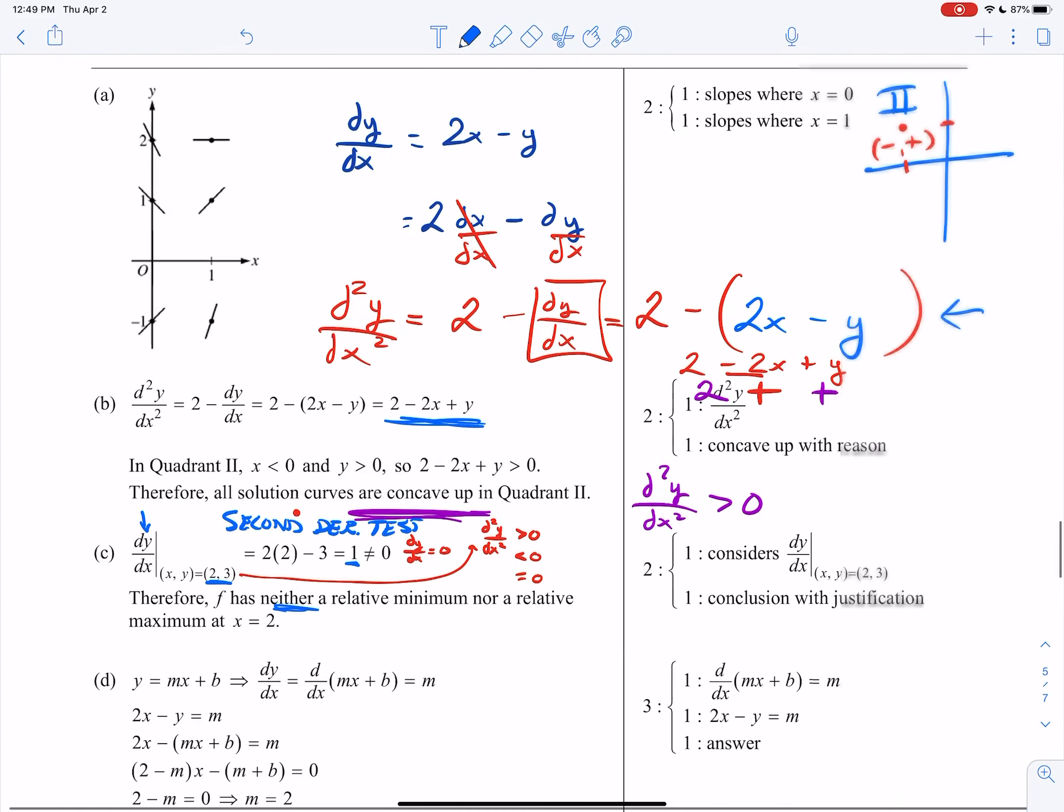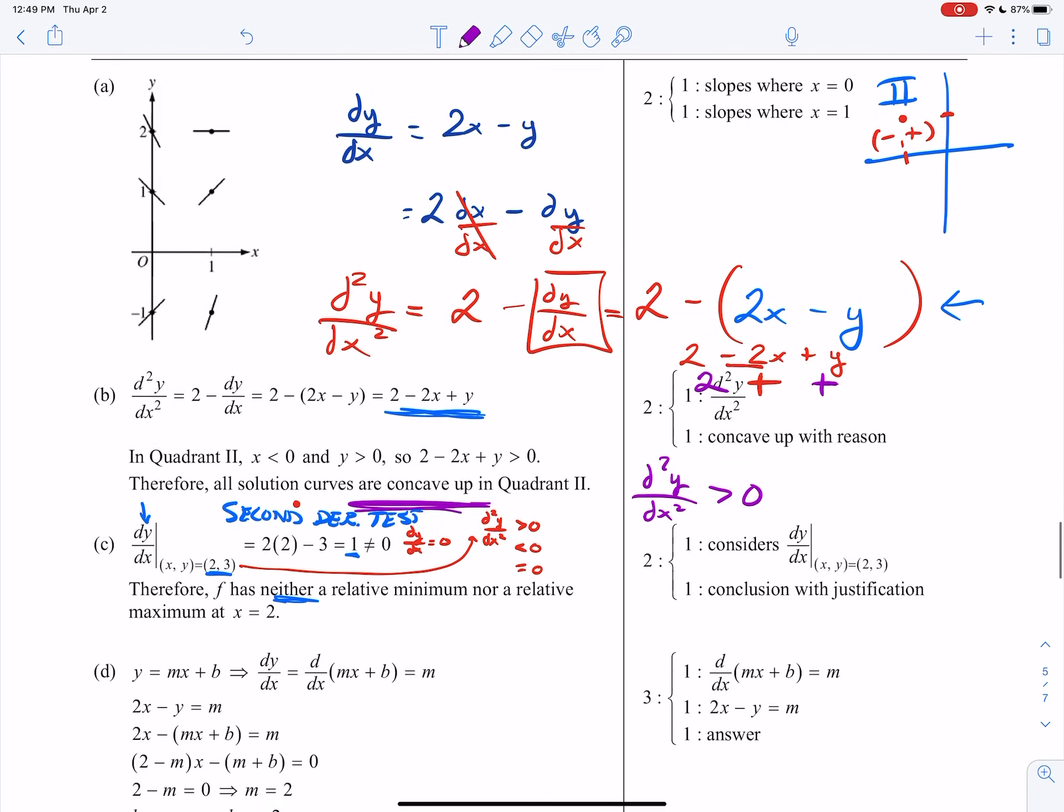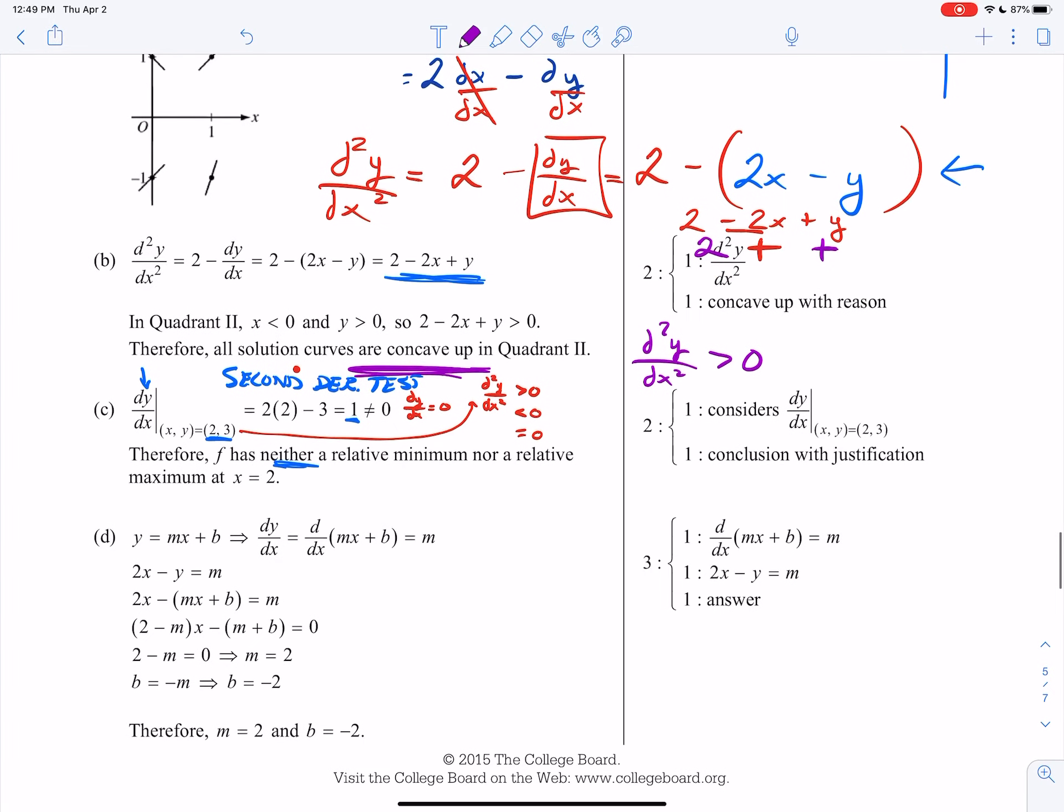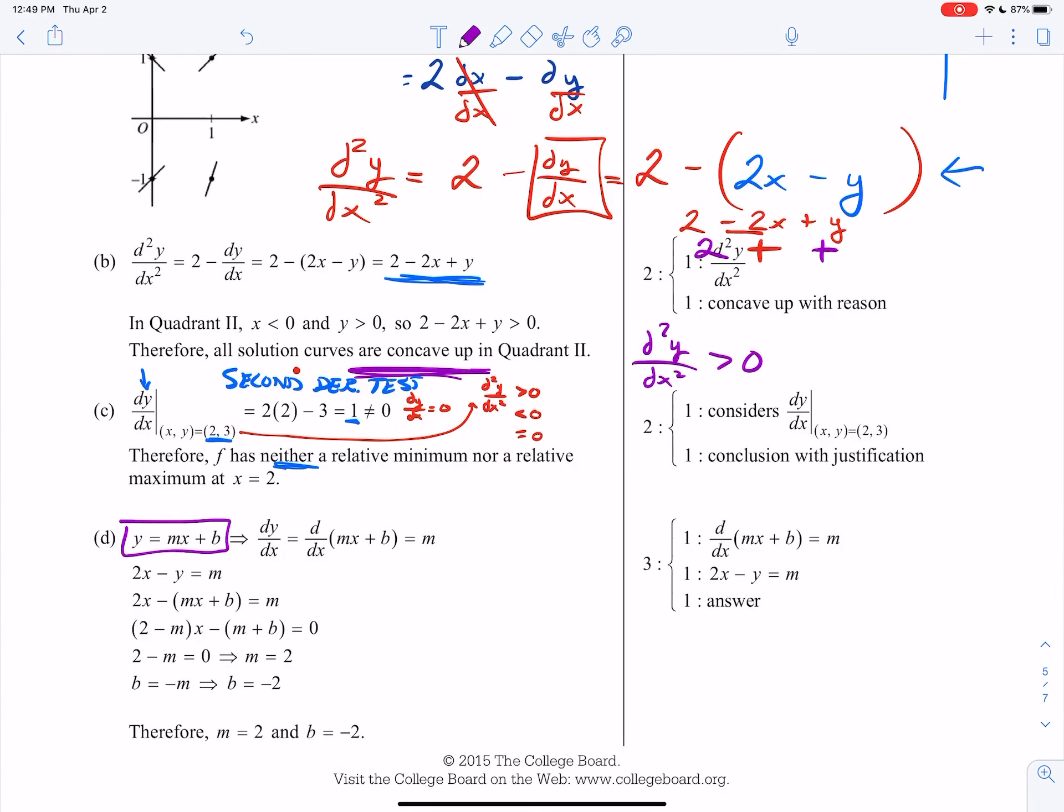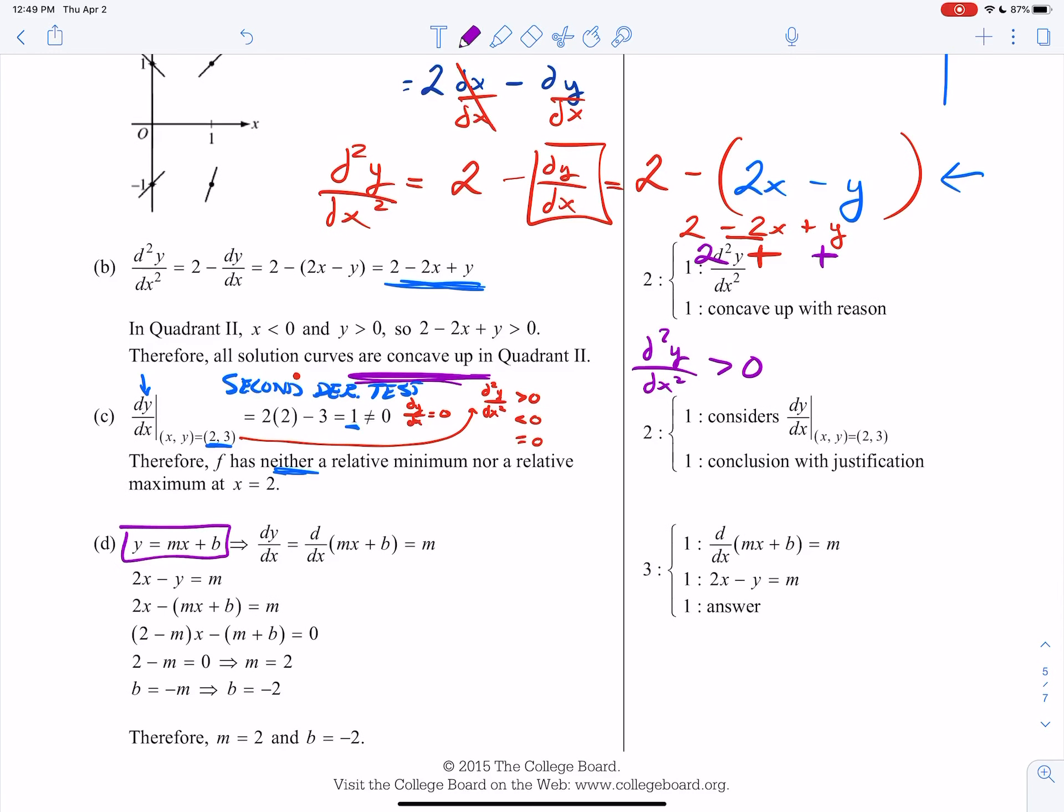Here's the last one, part D. Find the values of the constants M and B for which y equals mx plus b is the solution. This one here is an absolute outlier, so let me start with that. So if y equals mx plus b is your solution, then its derivative, if I take the derivative of that equation, it should just be m, because the derivative of mx is just m, and b is just a constant. So if you take the derivative of a constant, it's just 0.